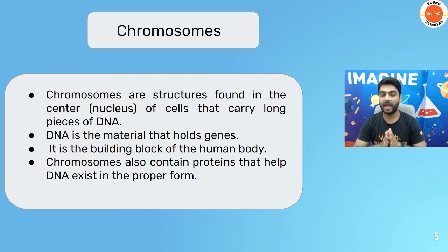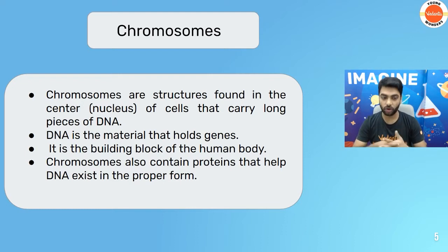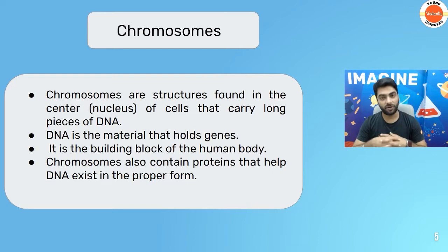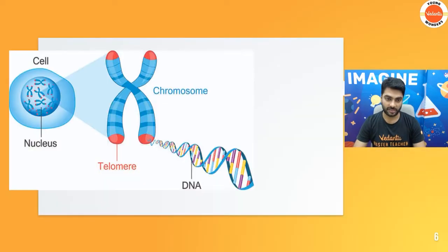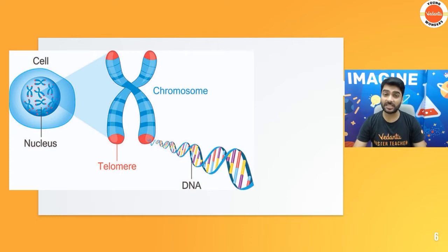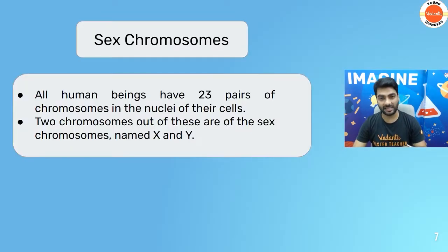Out of these 46, 44 are body chromosomes, or you can also call them autosomes. 44 are autosomes and two are sex chromosomes or allosomes. These two, in males, are X and Y, and in females, it is X and X.